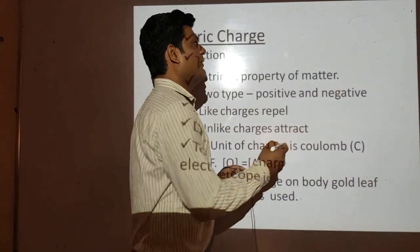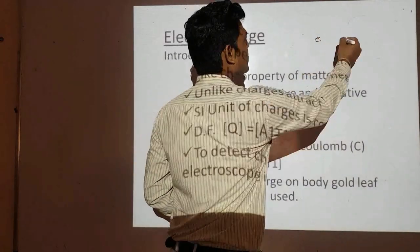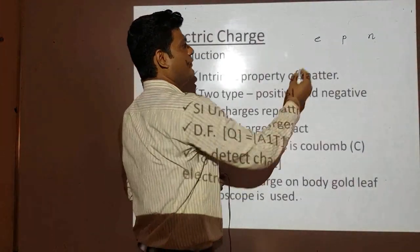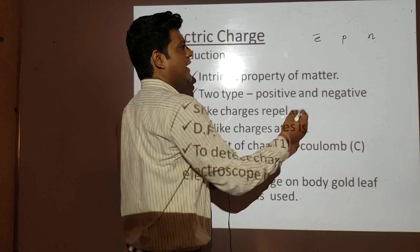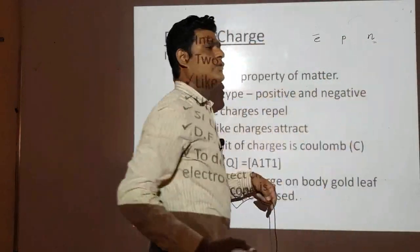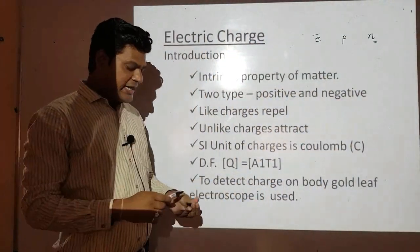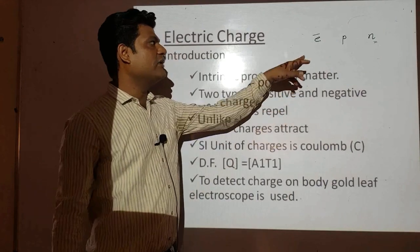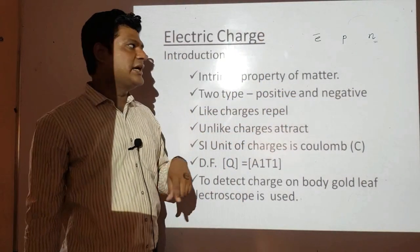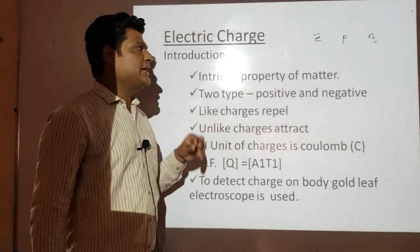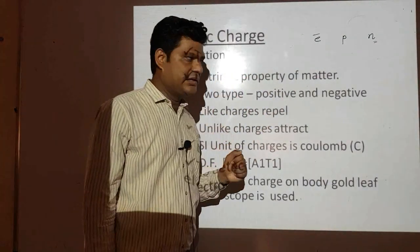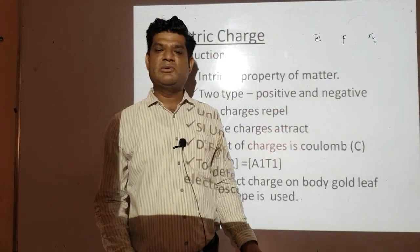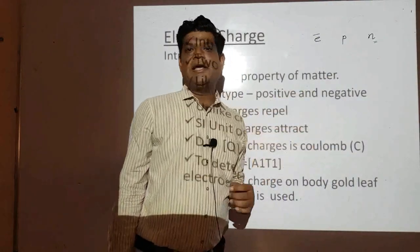Consider the particles: electron, proton, and neutron. Electrons have negative charge, protons have positive charge, and neutrons have no charge. That is why electrons are known as negatively charged particles and protons as positively charged particles. Neutrons have no charge.